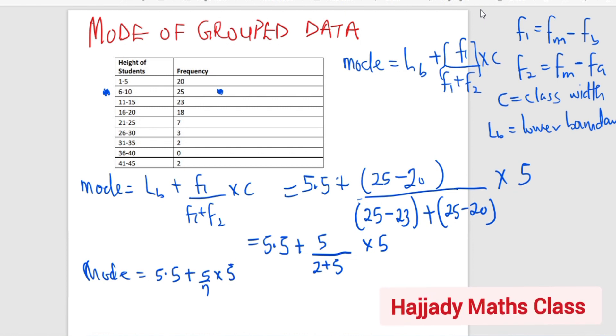So with this, I'm going to have 5.5 plus 5 times 5 is going to be 25. 25 over 7 is going to give me 3.57. We can add that together. So the mode is going to be 9.07. And approximately my mode is going to be 9.